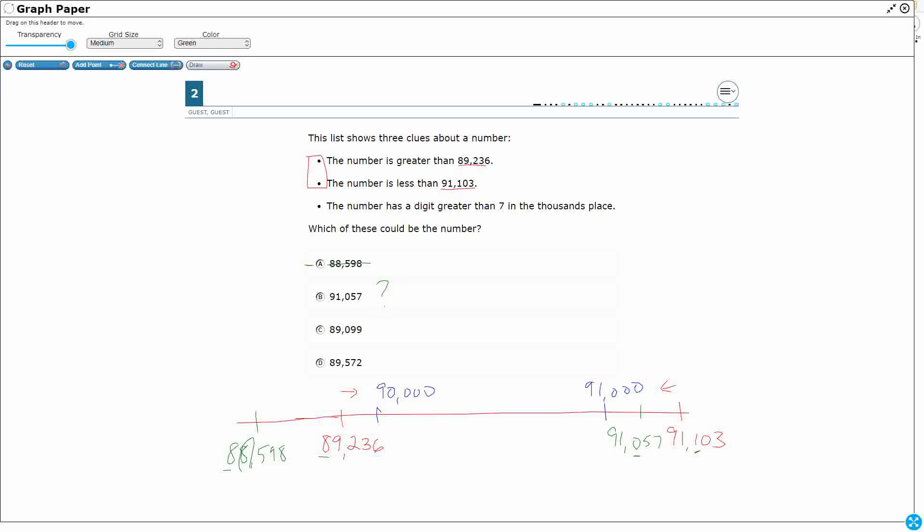So question mark, 89,099. Well, that's also not going to work. 89,099. It does have a 9 in the thousands, that's fine. But this 0 in the hundreds is less than the 2 in the hundreds, still smaller than I need to be. So I've already eliminated two answers.